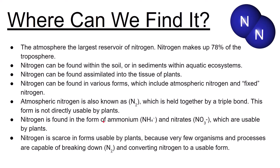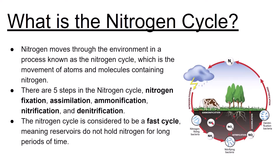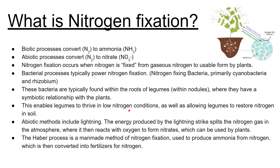The two forms of nitrogen usable by plants are ammonium (NH4+) and nitrate (NO3-). The nitrogen cycle is the movement of atoms and molecules containing nitrogen through an ecosystem. There are five steps: fixation, assimilation, ammonification, nitrification, and denitrification. The nitrogen cycle is considered a fast cycle, meaning reservoirs don't hold nitrogen for a long period of time relative to something like the phosphorus cycle.